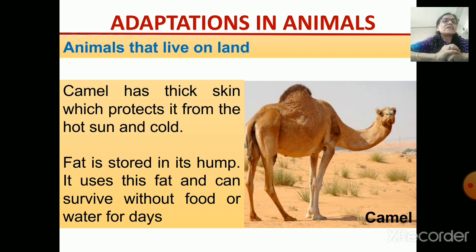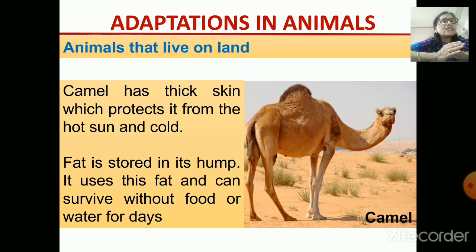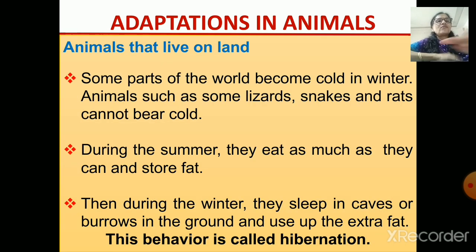How is the camel adapted to live in the desert? It has thick skin which protects it from the hot sun, and it can also store water. In its hump, it also stores fat, which helps it to survive without food and water in the desert conditions. These are the adaptations of camels.